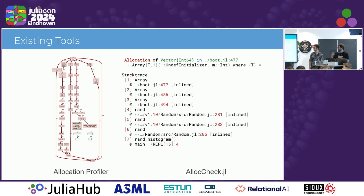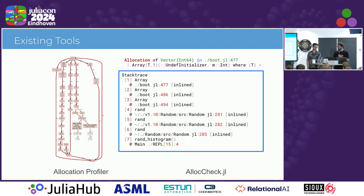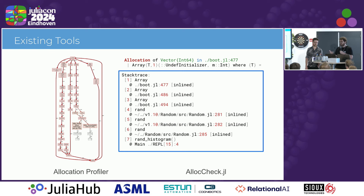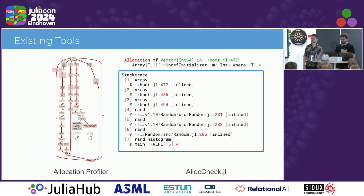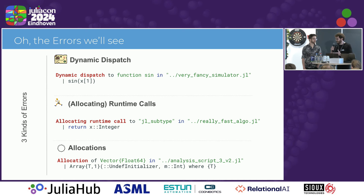We think that AllocTrack is a nice place to start because it gives you something that looks a lot like a Julia error. You can see here, for example, it shows that you have an allocation of vectors in line 64. It gives you a stack trace, very much like a Julia error, so everyone is a bit used to seeing how these work. We have a couple of errors that Cody can go a little bit deeper on.